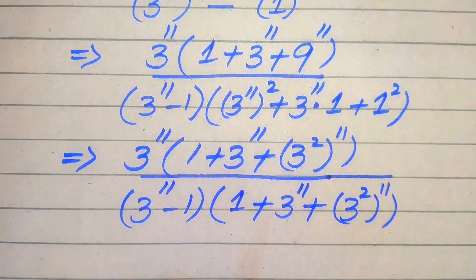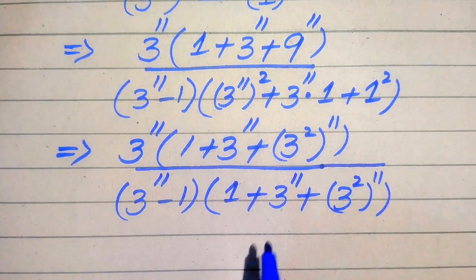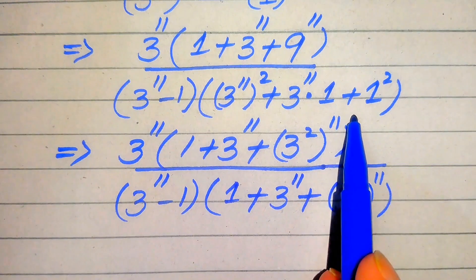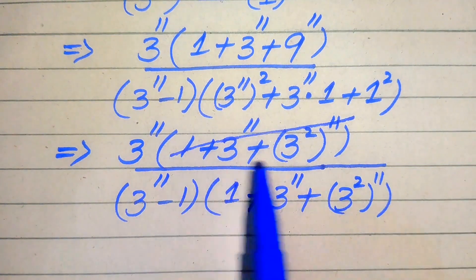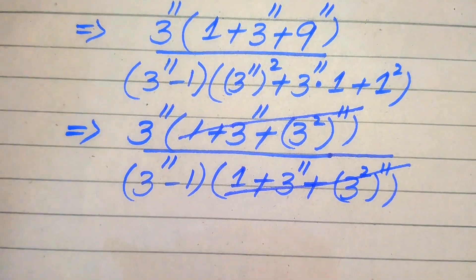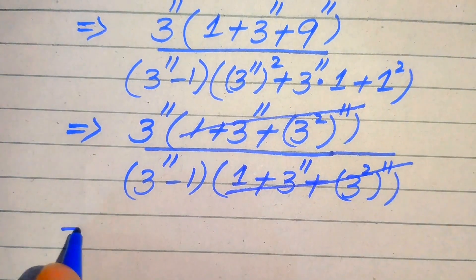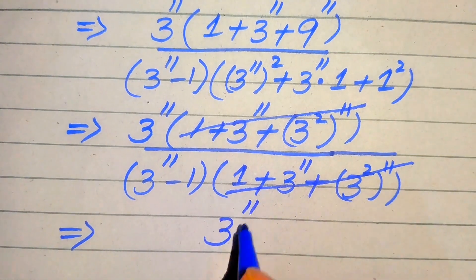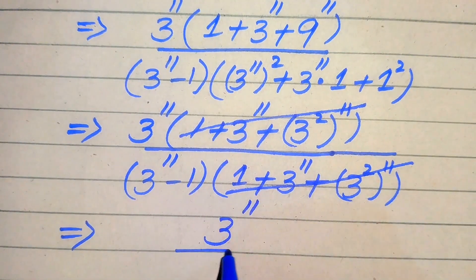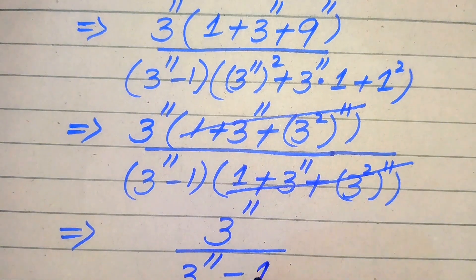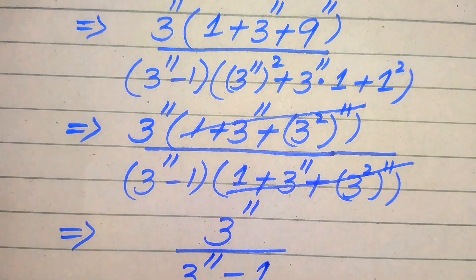Now you can see that from the numerator and denominator we have the same term, so we cancel this whole term. After cancellation, the remaining values are 3 to the power of 11 divided by 3 to the power of 11 minus 1.